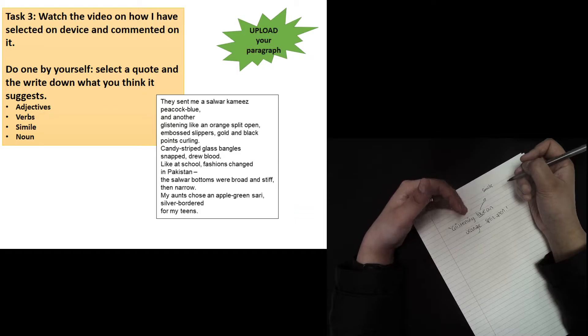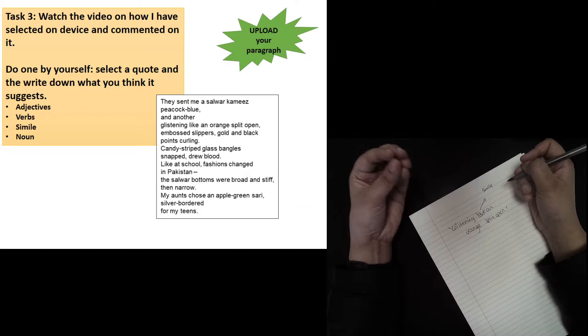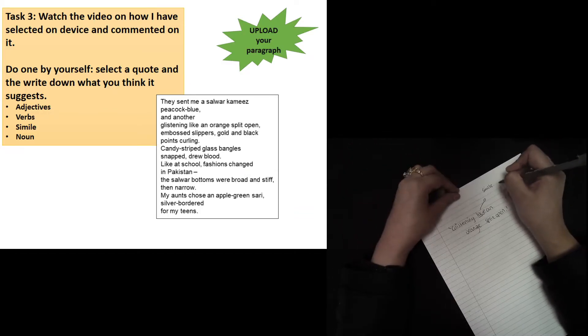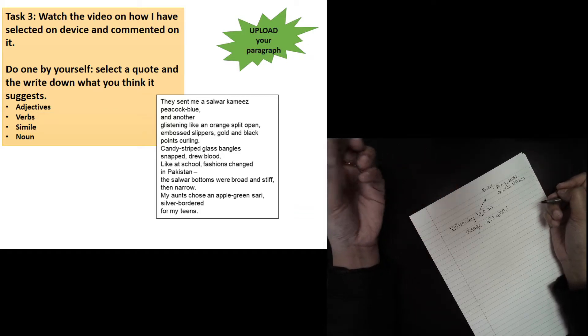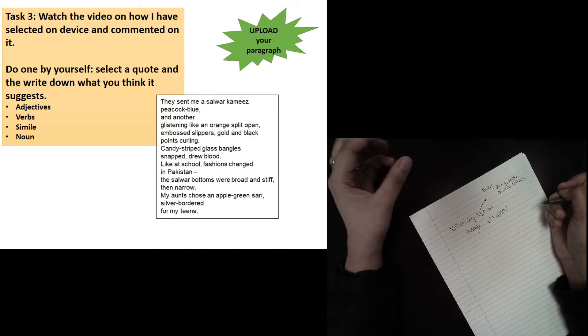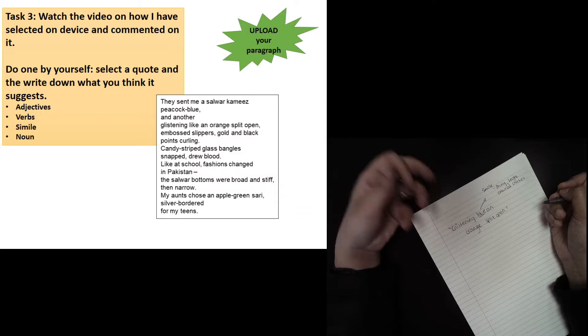For this simile, she's comparing how her clothes or her silver chemise looks like an orange split open. When you look at an orange split open, you see this shiny color, they're bright. So I'm going to write these words down: shiny, bright color clothes. When you look inside an orange, depending on the light, it looks like there's different shades of orange in there because of the light hitting it. So you can maybe say that she's